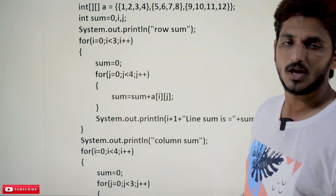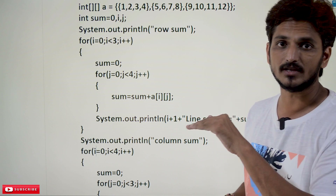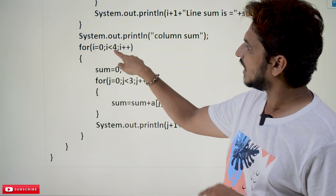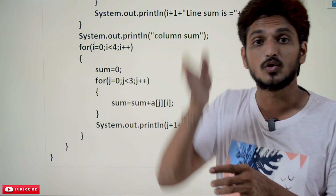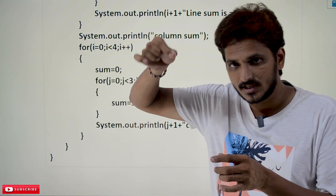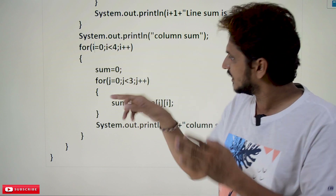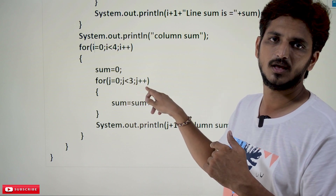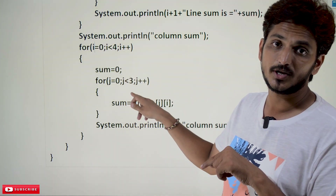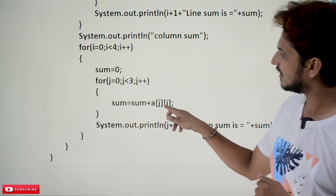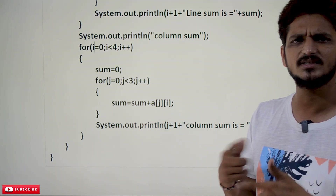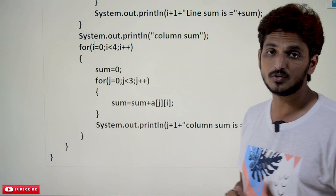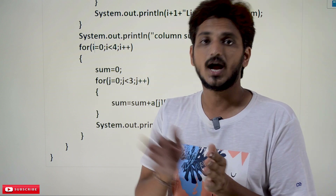This nested loop helps us identify all elements row-wise. Similarly, we write another nested loop for column-wise sum. Here i = 0, i < 4, i++ — i is now pointing to columns. Inside, j = 0, j < 3, j++ — j points to the row numbers. Since i points to columns and j to rows, we access a[j][i] instead of a[i][j]. The remaining logic is the same — sum all elements column by column and display the result.